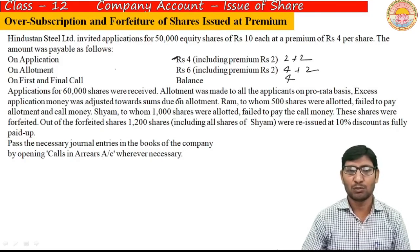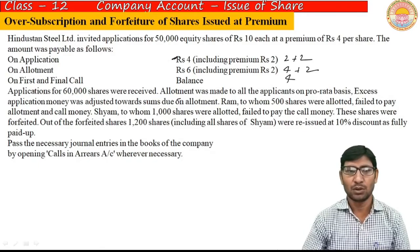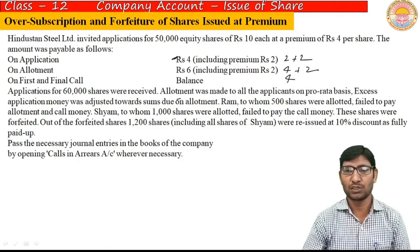Shyam, to whom 1,000 shares were allotted, failed to pay the call money. These shares were forfeited out of 1,200 shares. All shares of Shyam were reissued at 10% discount as fully paid up.